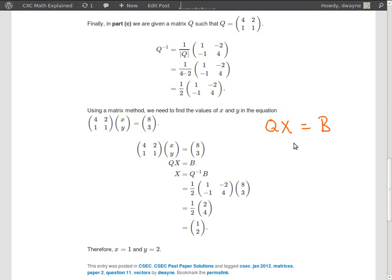So divide on both sides by Q and the Q's will cancel here and you'll be left with X equal B over Q. But B over Q is the same as Q inverse times B.